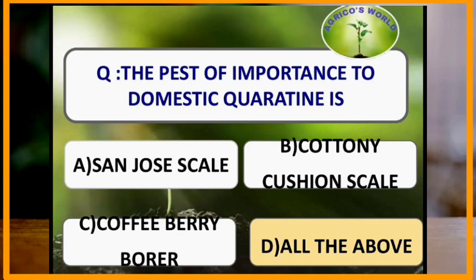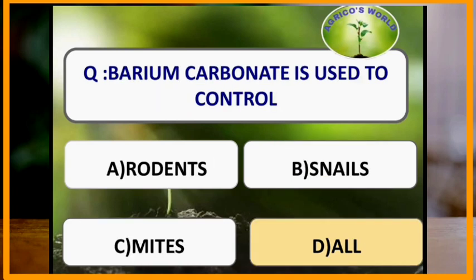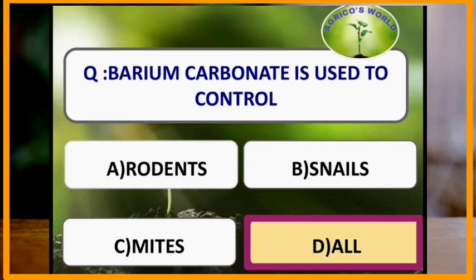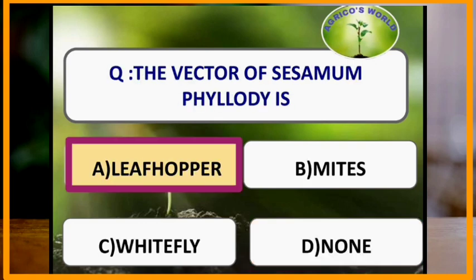Pests of importance to domestic quarantine include Senjo scale, cottony cushion scale and coffee berry borer. Barium carbonate is used to control rodents, snails and mites. The vector of sesame phyllody is the leafhopper.